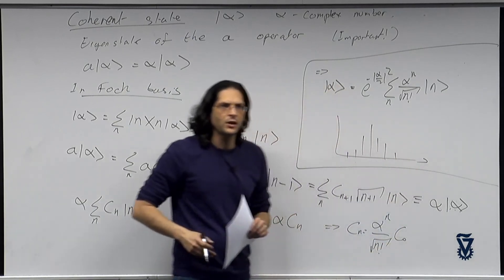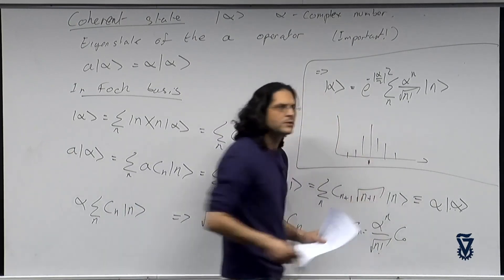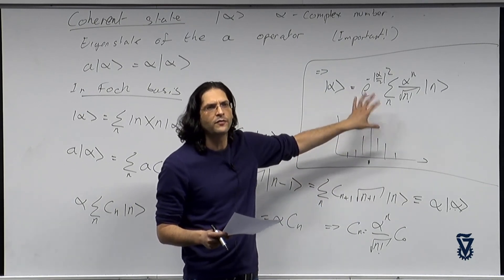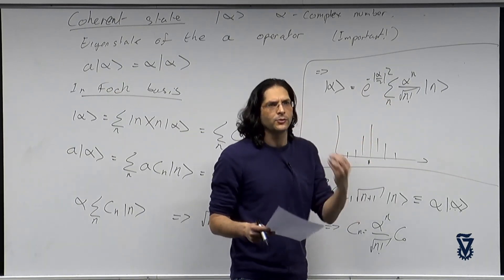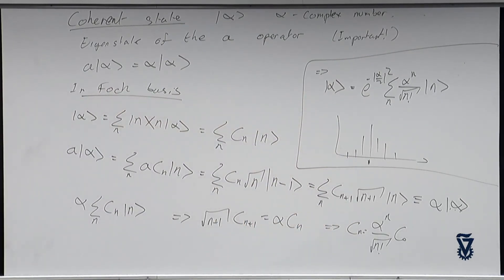We're going to discuss this in the beginning of next lesson. This mean value is going to be the mean number of photons in this electromagnetic mode. We'll do all of that next week. Are there any questions? If not, we'll meet again next week. Good luck with submitting the homework.